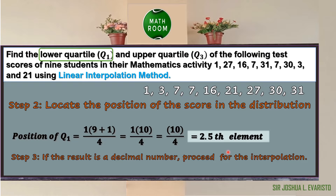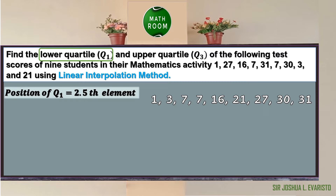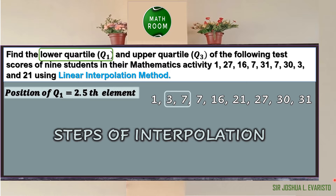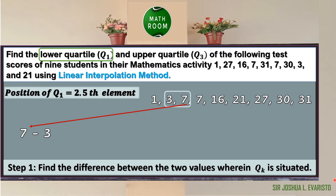Step 3: if the result is a decimal number, proceed for the interpolation. Since the result is 2.5, which is a decimal, interpolation is needed. The position of Q sub 1 is the 2.5th element, meaning it is between the second and third element, which are 3 and 7. Step 1 of interpolation: find the difference between the two values — 7 minus 3 equals 4.